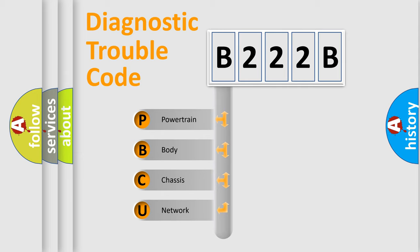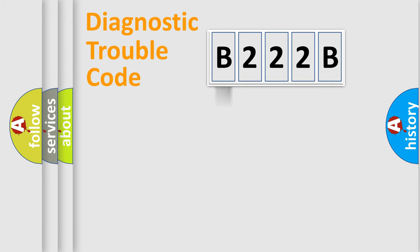We divide the electric system of automobile into the four basic units: Powertrain, Body, Chassis, and Network.